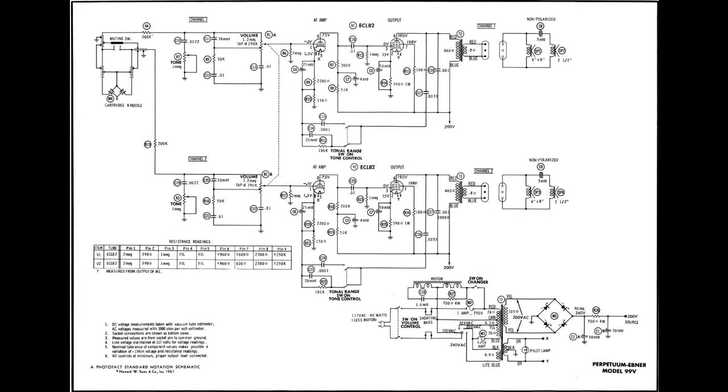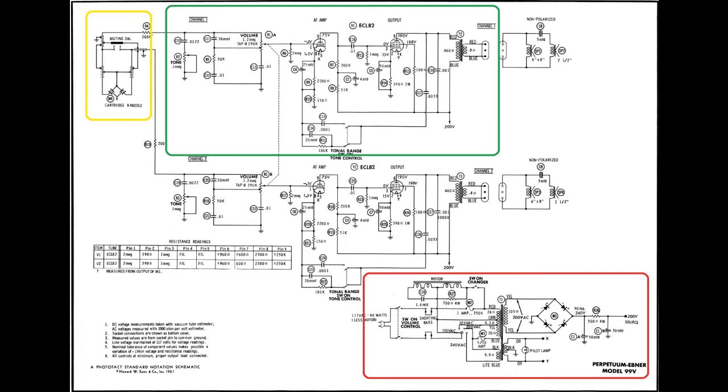First we have the power block. Next, input. The amplification block for channel 1 and another amplification block for channel 2, which is actually a mirror of channel 1. And finally two output blocks, the left speaker and the right speaker.